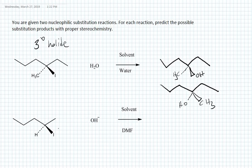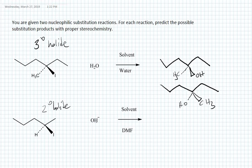Now let's move to the second reaction. We have a substrate, a nucleophile, and a given solvent. The substrate is an alkyl halide, and the carbon bearing the leaving group has two neighboring carbons, making this a secondary halide. The nucleophile is hydroxide — a very good base, and it's charged, so it's a strong nucleophile. The solvent is DMF, dimethylformamide, which is a polar aprotic solvent.